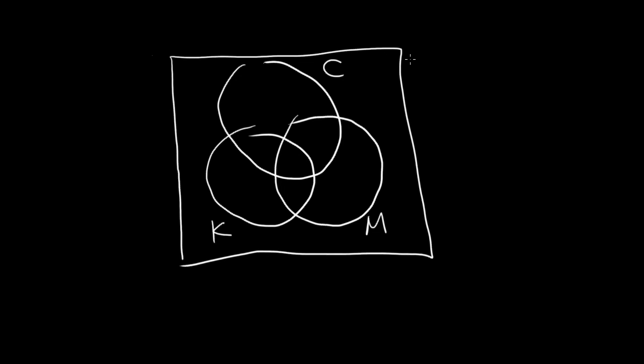So here you have 30 students surveyed, so the number in the universe is 30. 20 like Captain, but there's nothing we can fill in yet. 8 like Keystone, that's this whole area but nothing we can fill in yet. 10 like Miller, can't fill in that either. 5 don't like any of these, so we know the outside area is 5, so we can fill that in.